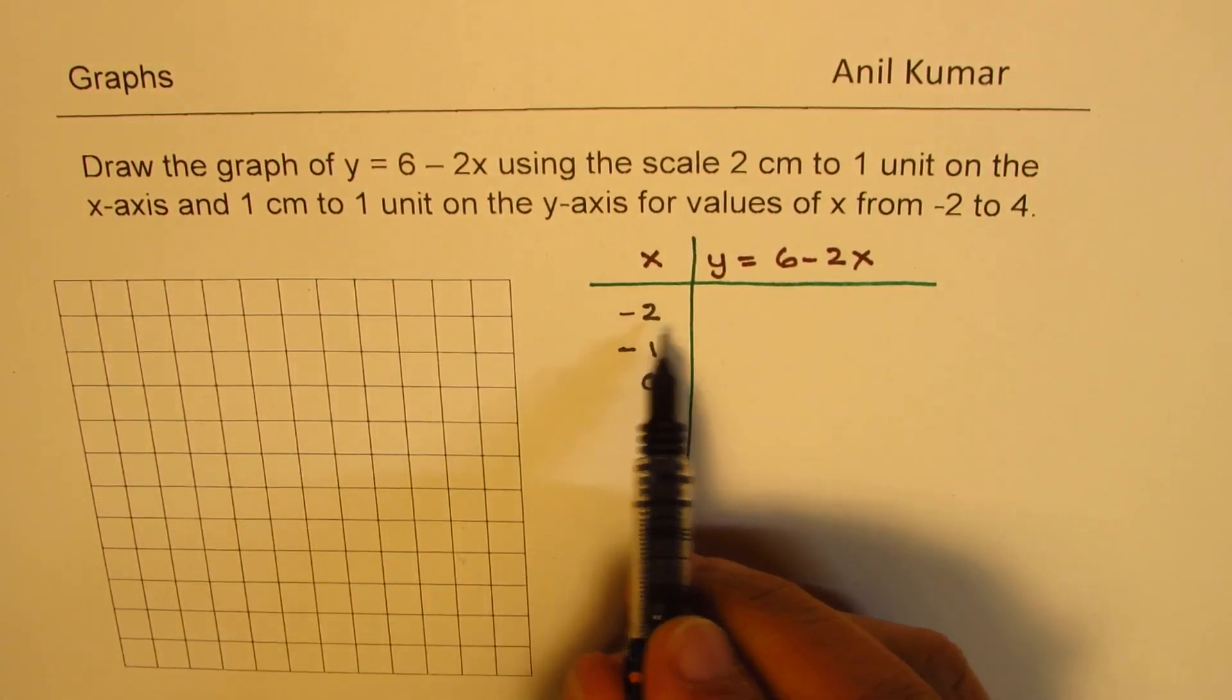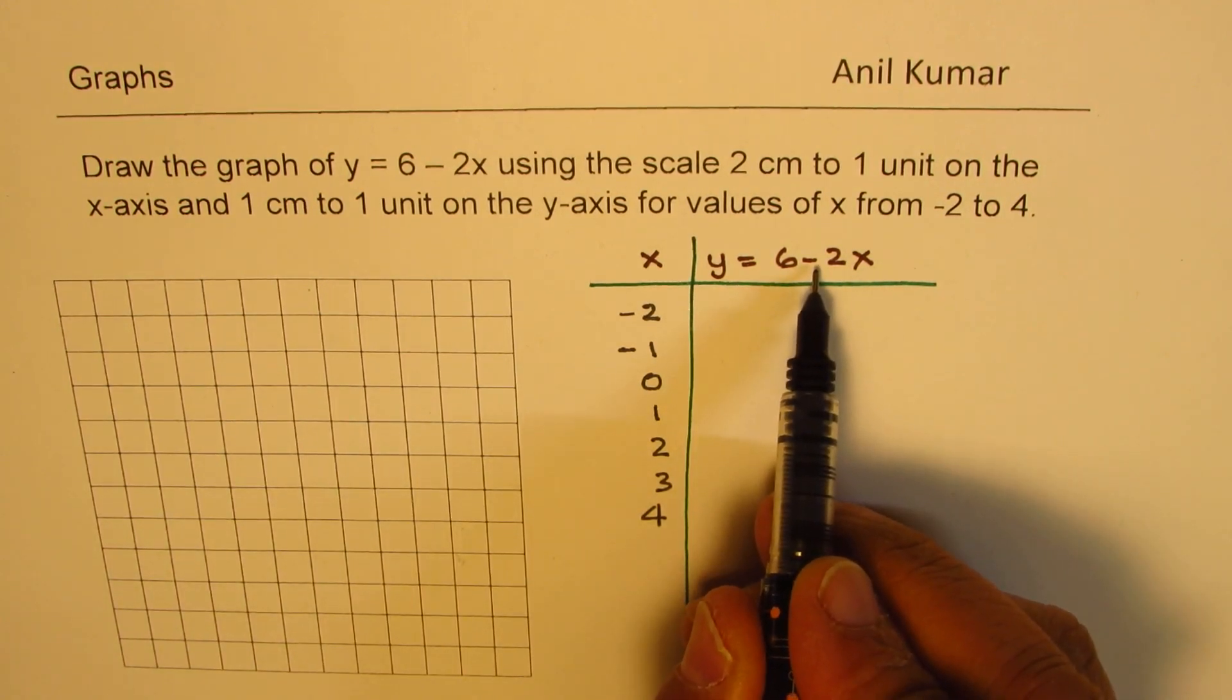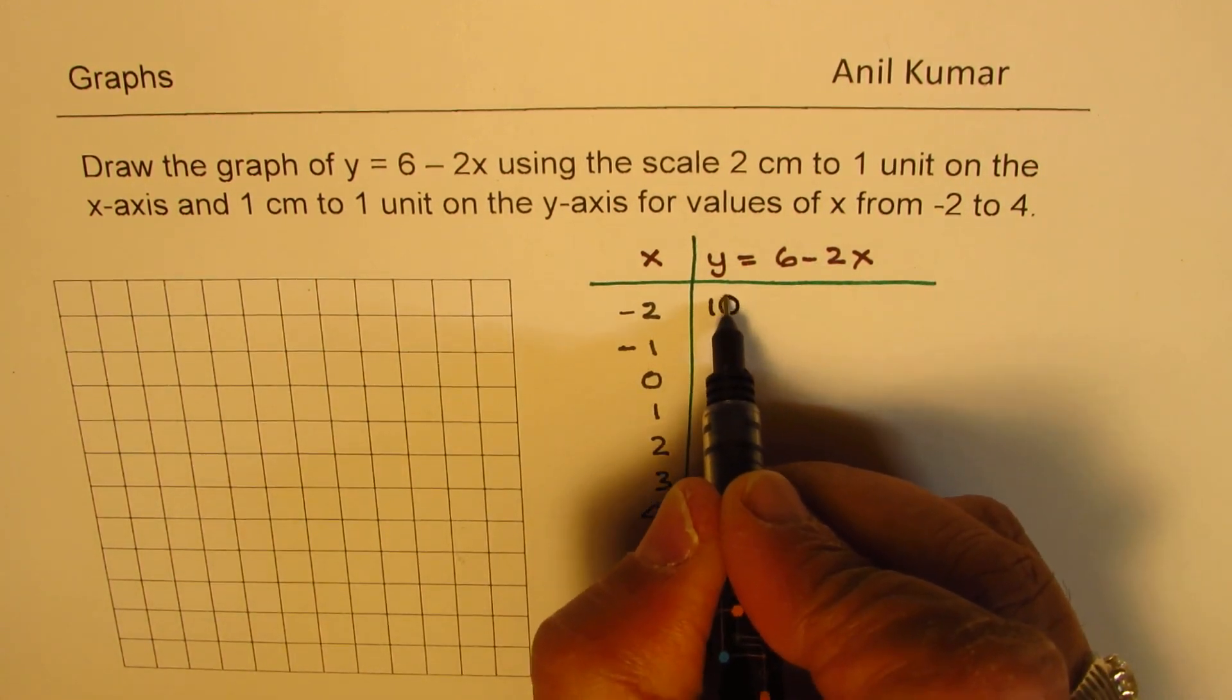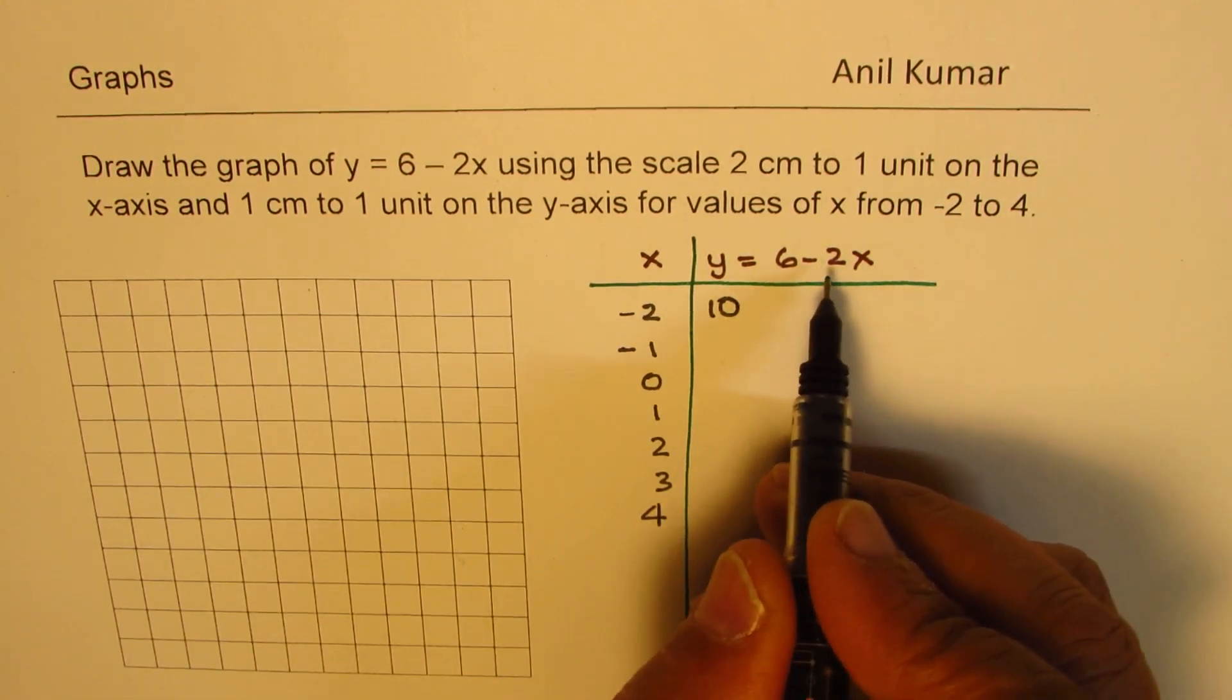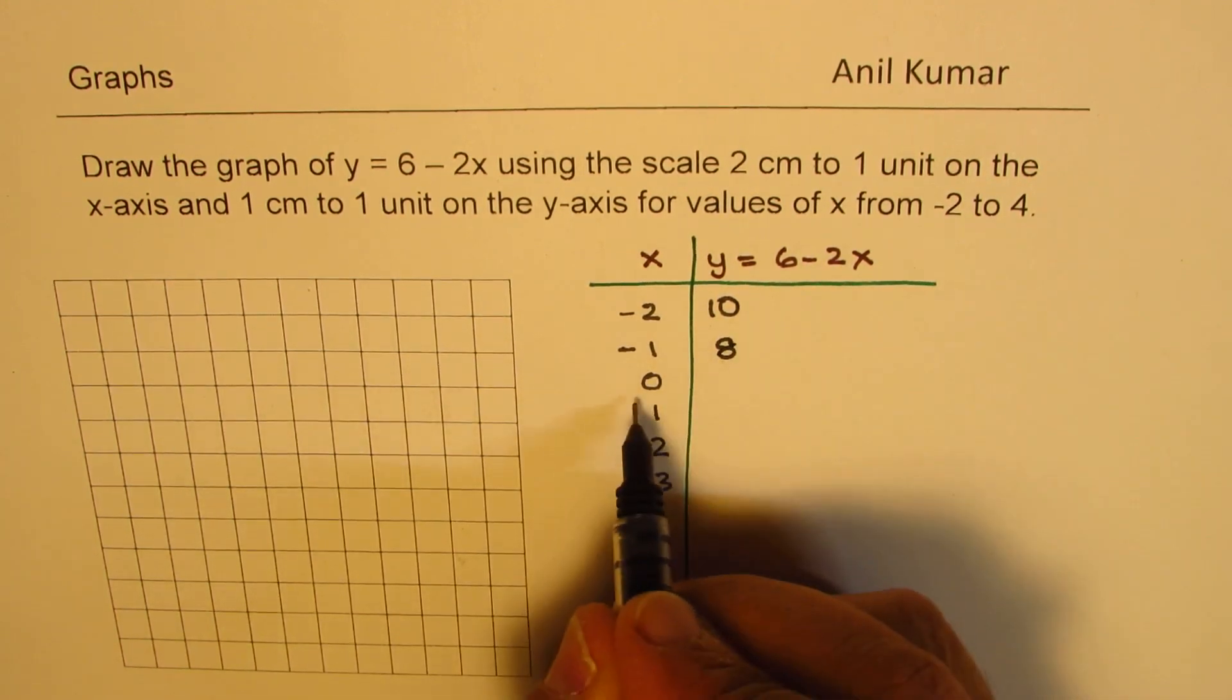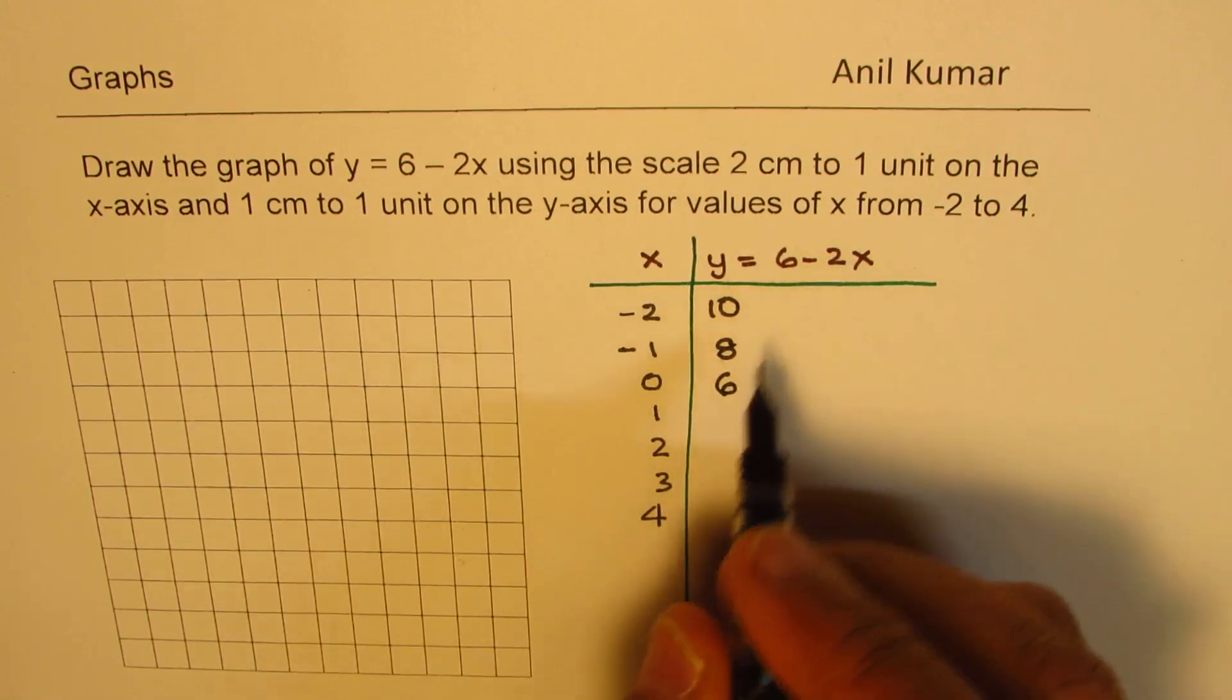So if I place the value minus 2 here, then minus and minus becomes plus. So we get plus 4. And 6 plus 4 gives us a value of 10. At minus 1, the value will be 6 minus minus 2, that means 6 plus 2, which gives us 8. At 0, we get a value of 6. And then at 1, 6 minus 2 is 4.